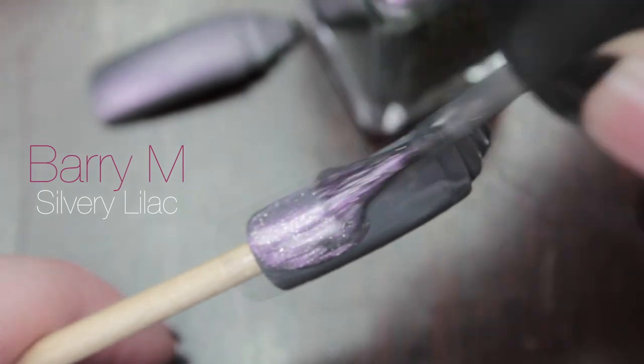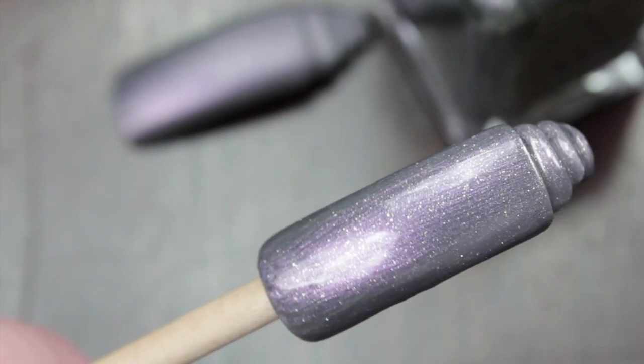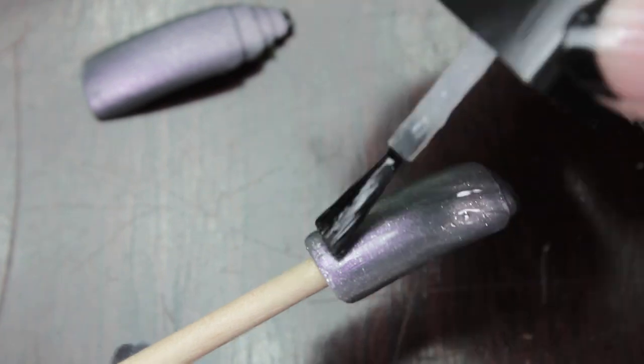Once that's dried I'm going to go over it with a silvery lilac and I'm just going to be doing this on the top of the nail. As pretty as this color is, we can't let it look that shiny if it's meant to be sloth, so I'm going to be using a matte nail varnish over it.